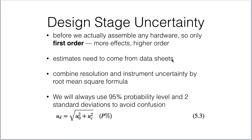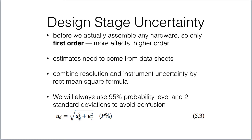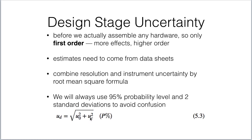Our estimates at design stage come from data sheets because we don't have any hardware yet, and we'll have manufacturer's uncertainty from those data sheets. We combine the resolution and the instrument uncertainty using the root mean square formula, always at 95% probability and two standard deviations. So our design stage uncertainty is the square root of the zero-order resolution uncertainty squared plus the instrument uncertainty squared.